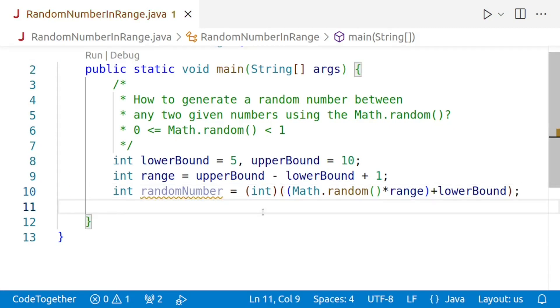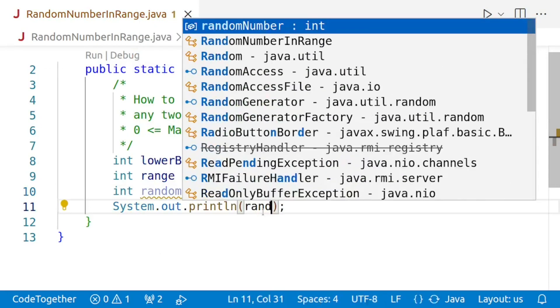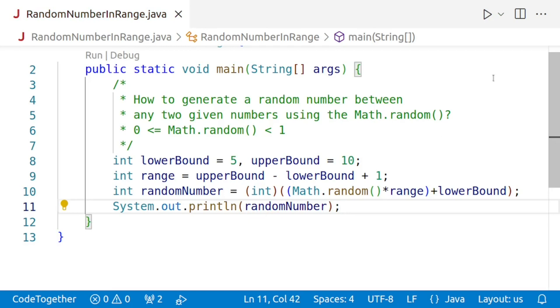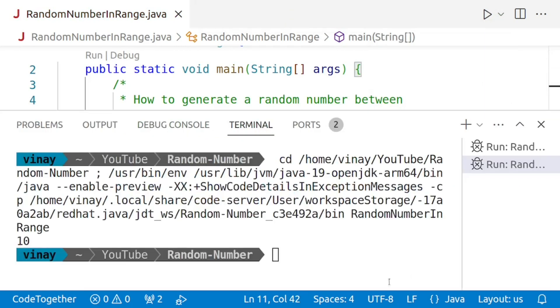Now, let us check whether the code is working or not by printing our random number. We'll say display random number and we'll run the code. So, we are getting 10 which is inside our range.